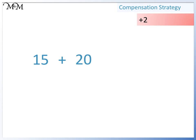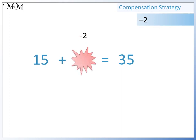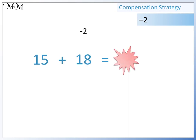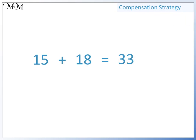15 plus 20 equals 35. Because we added an extra 2, we need to subtract the 2. Our original calculation was 15 plus 18, so we need to take 2 away from our answer. And so 15 plus 18 equals 33.